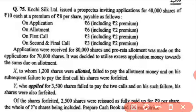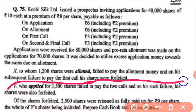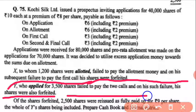Shareholder Y, who applied for 3,500 shares, failed to pay the two calls. On his failure, his shares were also forfeited. So Y applied for 3,500 shares and his shares were forfeited after failing the two calls.